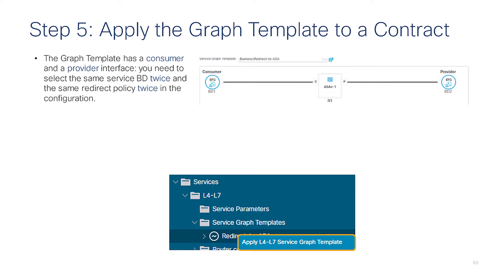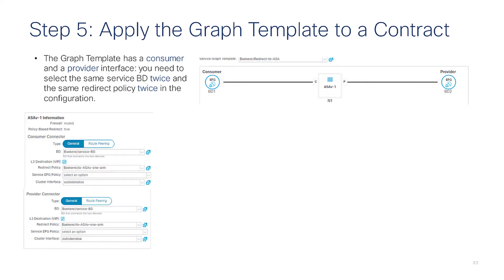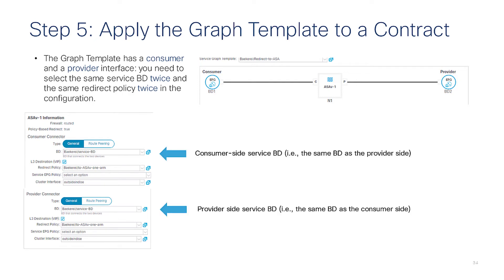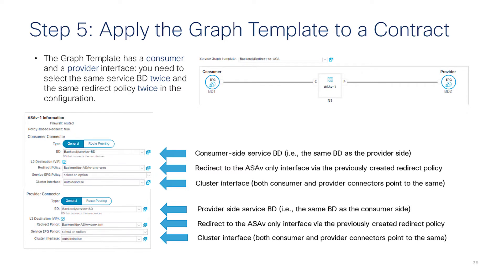When you apply the graph template to a contract, you still have a consumer and a provider connector for the graph template. The step that may not be very intuitive is that you need to assign both the consumer connector and the provider connector of the graph to the same service bridge domain. You also need to assign the same redirect policy to both connectors and select the same cluster interface for both sides of the graph.